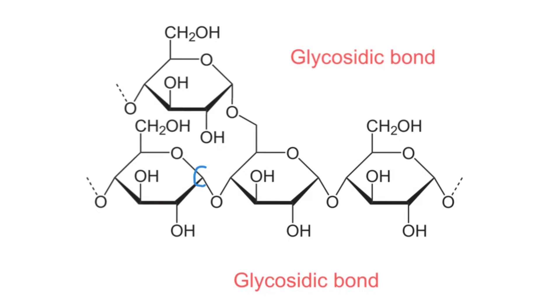Distinguishing between the 1-4 glycosidic bond and the 1-6 glycosidic bond is relatively straightforward. The 1-4 glycosidic bond is a bond between carbon number 1 and carbon number 4 in the two glucose molecules as seen here.